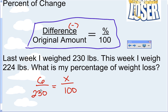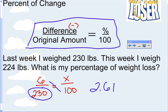We always subtract the biggest number minus the smallest number so this value stays positive. Now, just like we've been doing in this entire chapter, we're going to cross multiply and divide. Six times 100 divided by 230 — punching it into my calculator — gives me 2.61 percent, rounded to the hundredths.